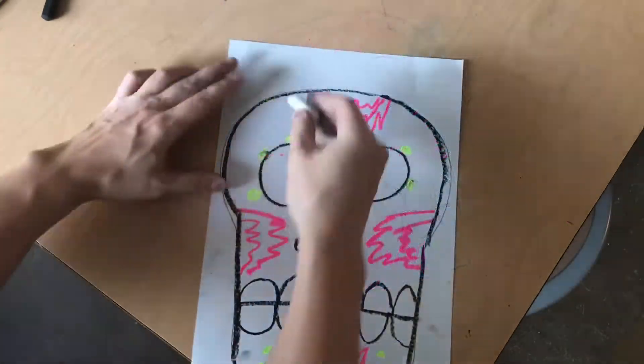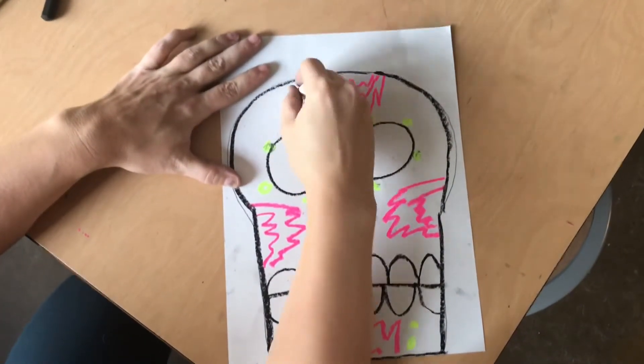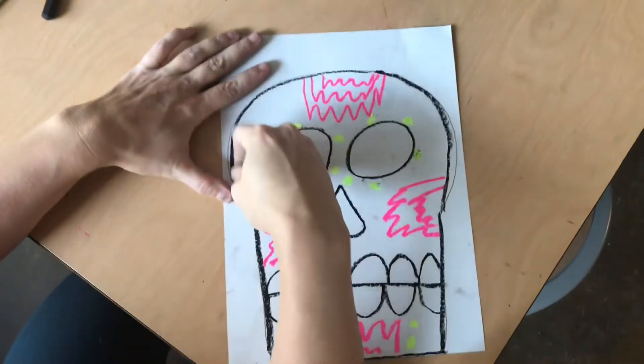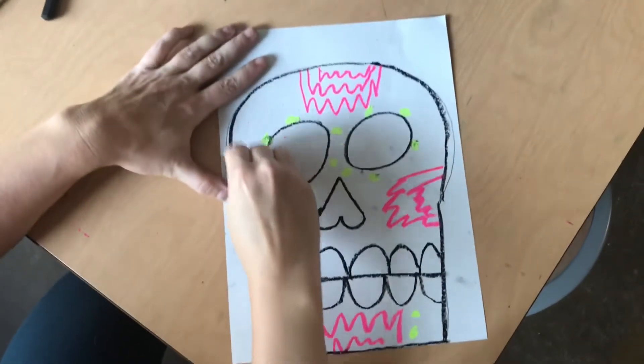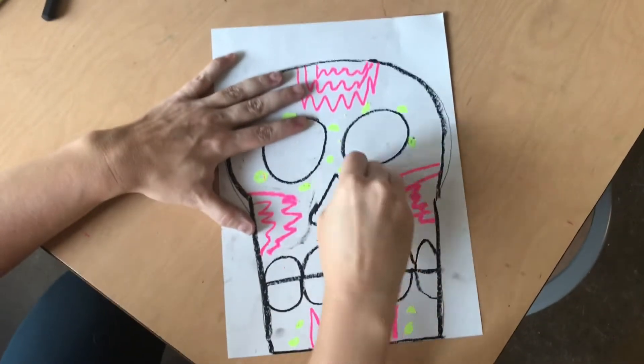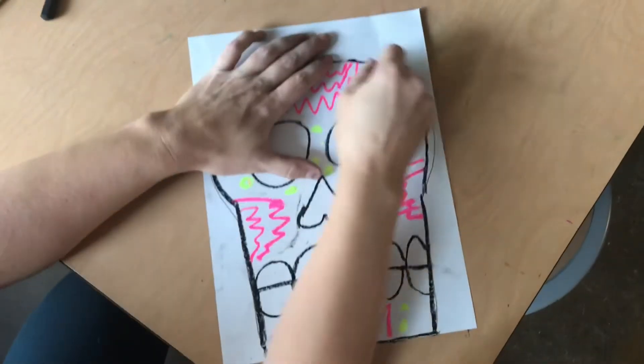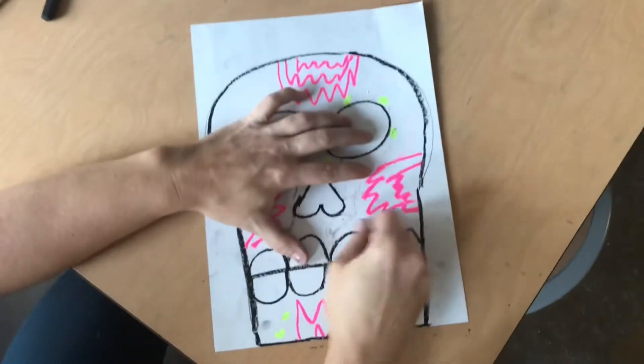And before you're done today, you get a white crayon and color in the bone, the sugar bone. So all of the space around the eyes, to the side of the nose and the teeth and the chin, all of those places you see me color, you are going to color white as well.